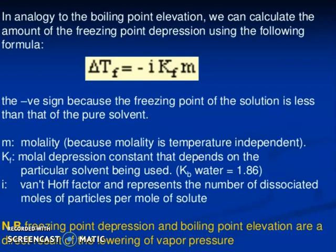In analogy to the boiling point elevation, we can calculate the amount of freezing point depression using the following formula, which is very important. I repeatedly urge you to memorize it — but try to understand and practice it. Practice will make you perfect. If you qualify the MBBS and other competitive examinations, you can enjoy. So, for class 12, remember: ΔTf is equal to minus Kf times molality. The negative sign is because the freezing point of the solution is less than that of the pure solvent.